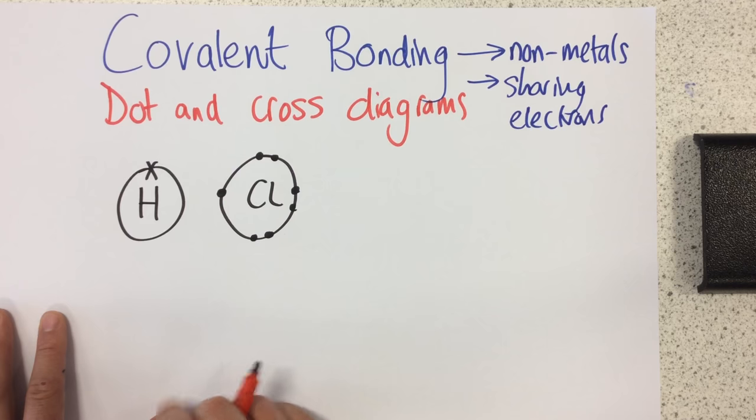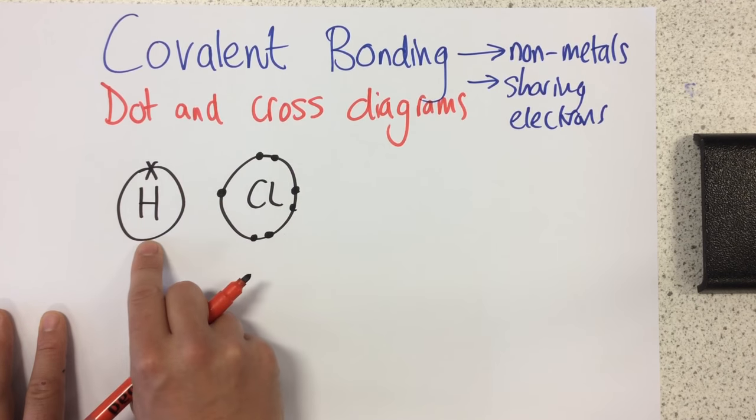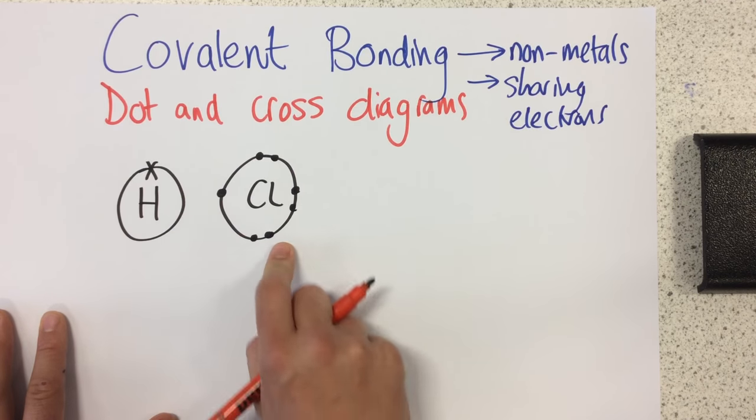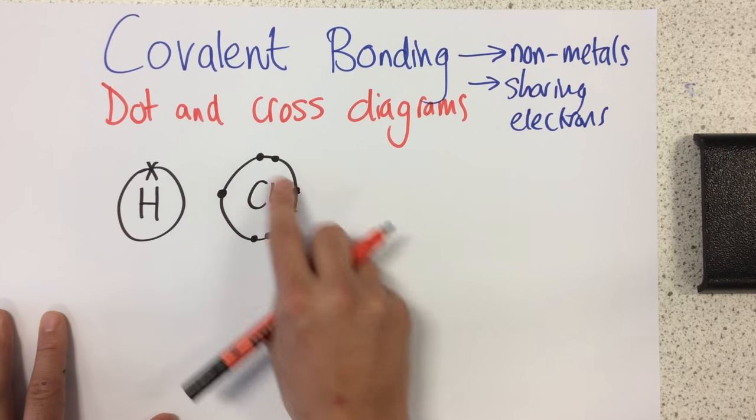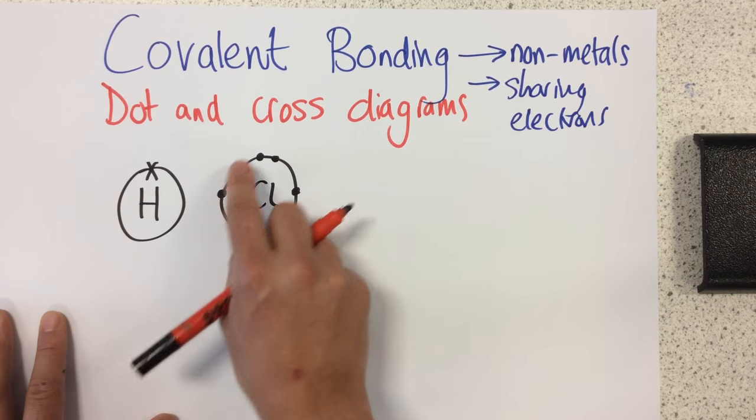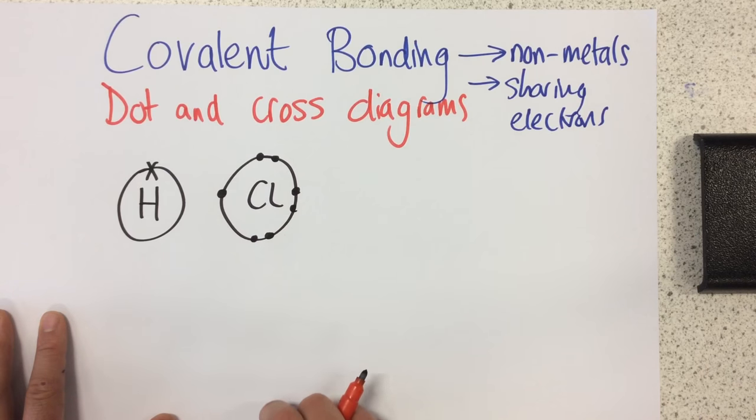Remember, any atom needs two electrons to fill up the first shell. Chlorine, this isn't its first shell, this is its outer shell, so it has seven electrons in that outer shell. It's in group seven of the periodic table.